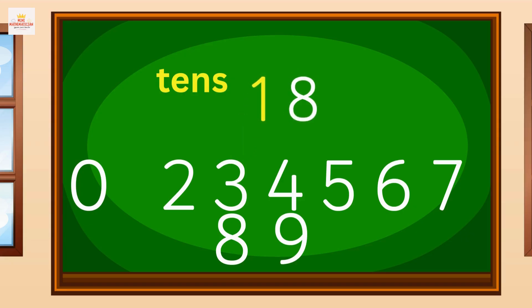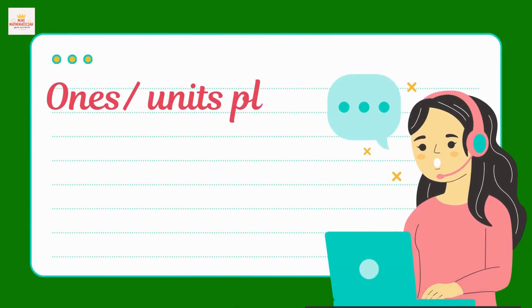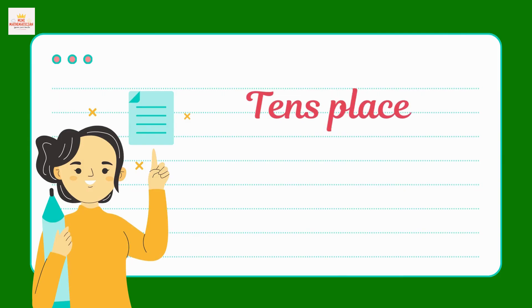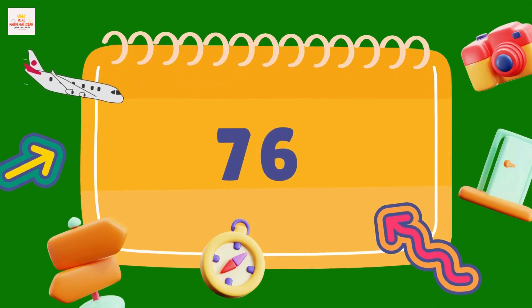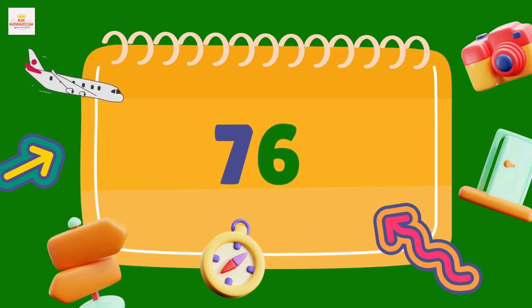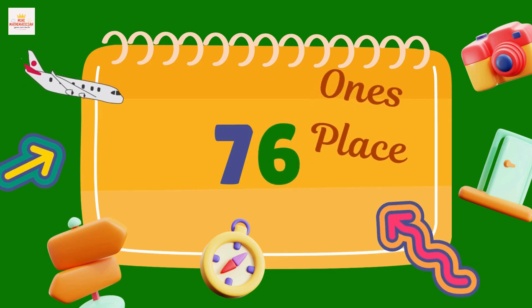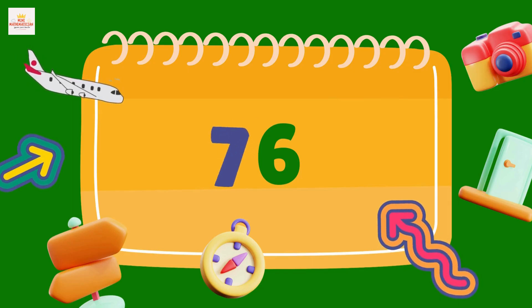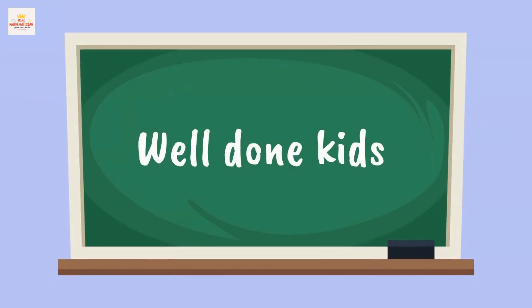If we put one in the tens place, the number becomes 18. So remember: the ones or units place is always on the right, and the tens place is the second digit from the right. Now look at the number 76 on the screen — can you tell me the place value of 6? Yes, it's in the ones place! And the place value of 7? Yes, it's in the tens place! Well done, kids!